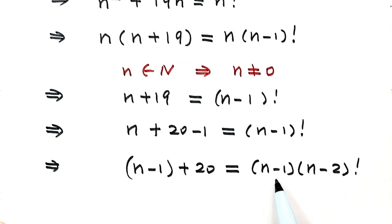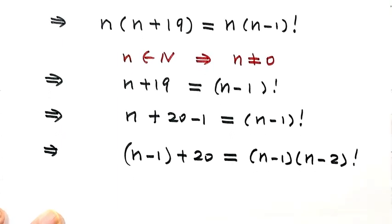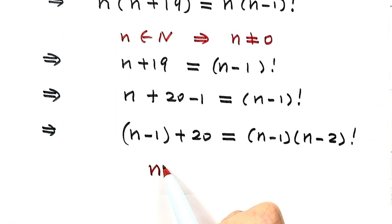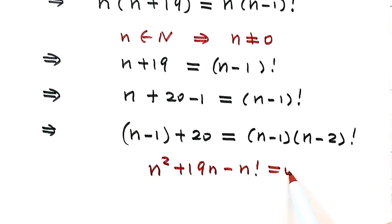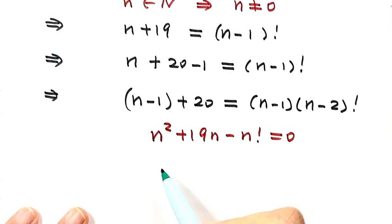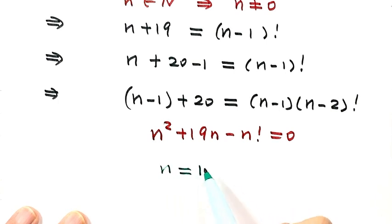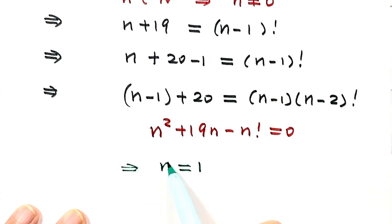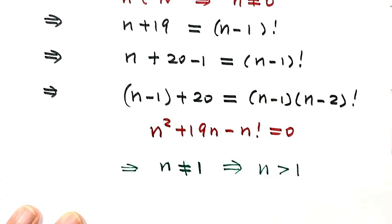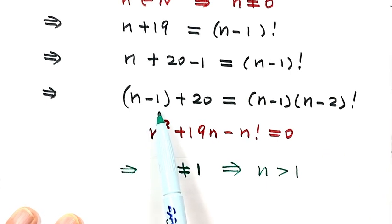We want to divide both sides by (n minus 1), but first we need to make sure n minus 1 is not zero. Looking at the original equation n squared plus 19n minus n factorial equals 0, when n equals 1, substituting confirms that 1 is not a solution. So n is not equal to 1. Since n is a natural number bigger than 1, n minus 1 is not 0, so we can divide both sides by (n minus 1).